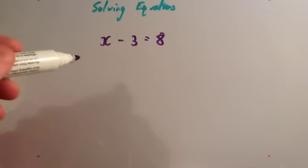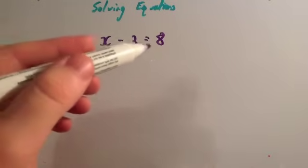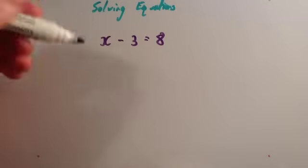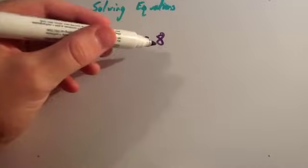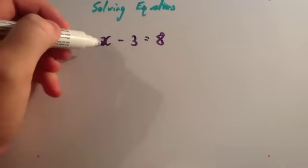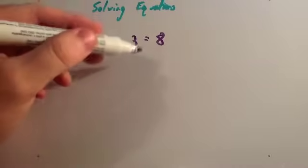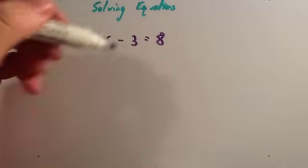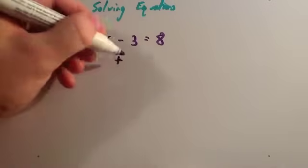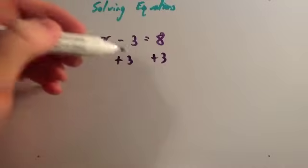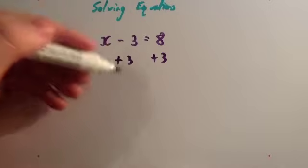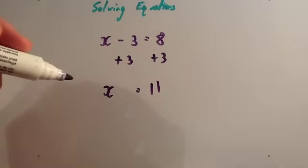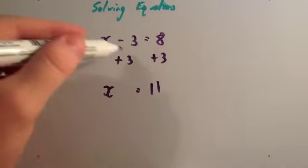Let's look at another one. The equation is x subtract 3 equals 8. We're going to focus on the technique for solving equations, not just getting the answer. Remember, you want to get x's on one side and numbers on the other. So you want to get rid of the minus 3 on the left-hand side. To get rid of the minus 3, do the opposite to both sides — the opposite of taking away 3 is adding 3. Minus 3 plus 3 is 0, so that disappears and you're left with x. On the right-hand side, 8 plus 3 is 11. So x equals 11. The key is to do the opposite to both sides to get rid of whatever is on that left-hand side.